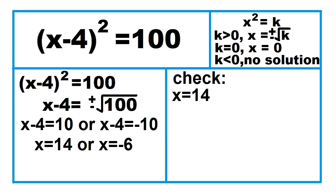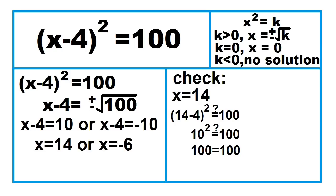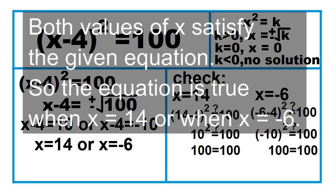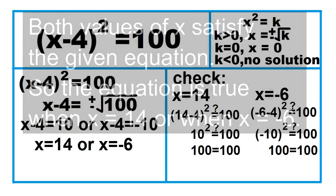Let's check. For x equals 14: is the square of the quantity 14 minus 4 equal to 100? Is the square of 10 equal to 100? Yes, 100 equals 100. For x equals negative 6: is the square of the quantity negative 6 minus 4 equal to 100? Is the square of negative 10 equal to 100? Yes, 100 equals 100. Both values of x satisfy the given equation, so the equation is true when x equals 14 or when x equals negative 6.